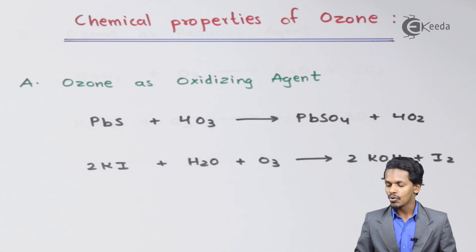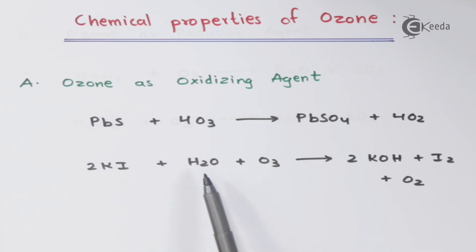The other reaction: whenever potassium iodide is treated with water and ozone, the product we get is KOH. The potassium was associated with iodine, but after reaction with ozone, potassium has oxidized along with it. This kind of reaction is an oxidation reaction where we also get I2 and O2 as byproducts. Therefore, ozone acts as an oxidizing agent.